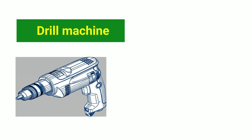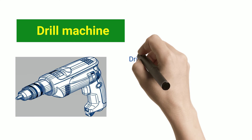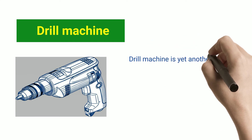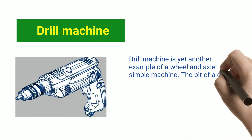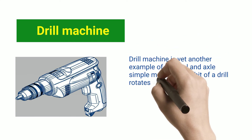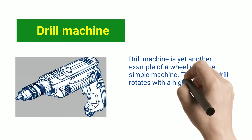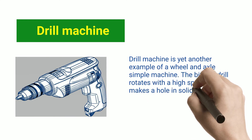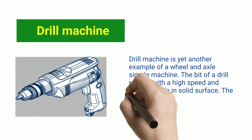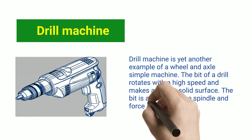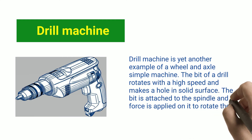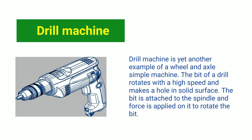Drill Machine. A Drill Machine is yet another example of a wheel and axle simple machine. The bit of a drill rotates at high speed and makes a hole in a solid surface. The bit is attached to the spindle and force is applied on it to rotate the bit.